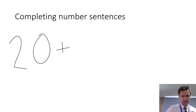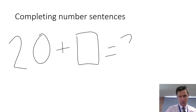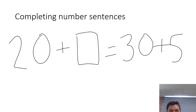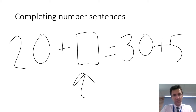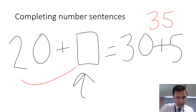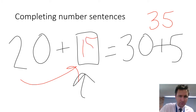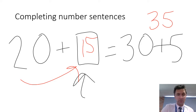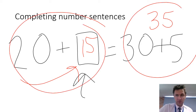20 plus square equals 30 plus 5. Now it looks tricky but really it's just asking you what's in the square. To do that you've got to know what's over here with the 30 plus 5. We know that 30 plus 5 is 35. So 20 plus what equals 35? The answer would be 15. Now both sides of the equation equal 35 — over here equals 35 and over here equals 35.